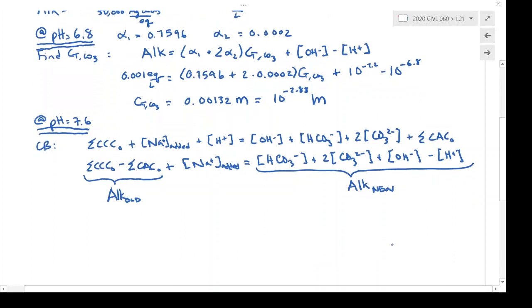And what you could see here is that the alkalinity is only changed in this problem by the addition of sodium hydroxide. So we can think of this as just a bump in the CCCs. So that's kind of an easier way to think about it. And ALKOLD is at pH equals 6.8.